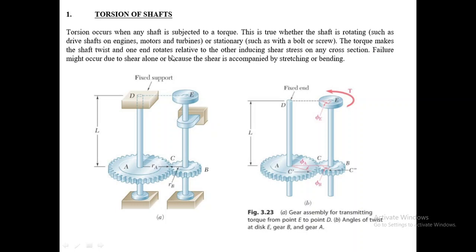The torque will make the shaft twist at one end, which is related to the other end, and this induces shear stresses at the cross section of the shaft. Because of these shear stresses, failure might occur in the shaft. During design of the shaft we have to make use of theories of failure and factor of safety to find out the appropriate diameter of the shaft.